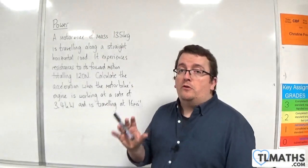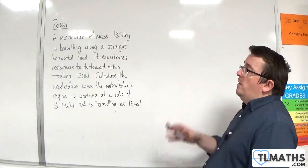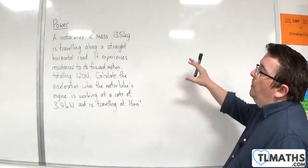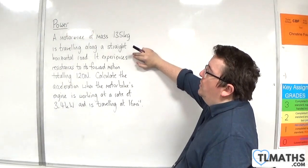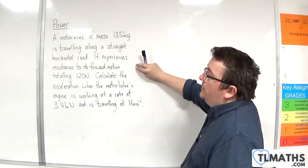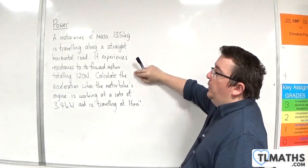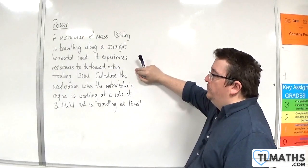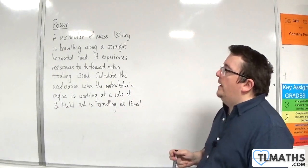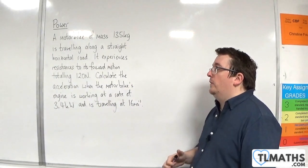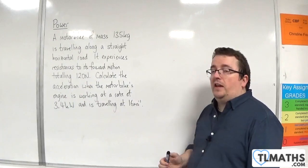In this video I'm going to go through a very similar example to the one in the previous video. A motorbike of mass 135 kilos is travelling along a straight horizontal road. It experiences resistances to its forward motion totalling 120 newtons. Calculate the acceleration when the motorbike's engine is working at a rate of 3.4 kilowatts and is travelling at 16 metres per second.